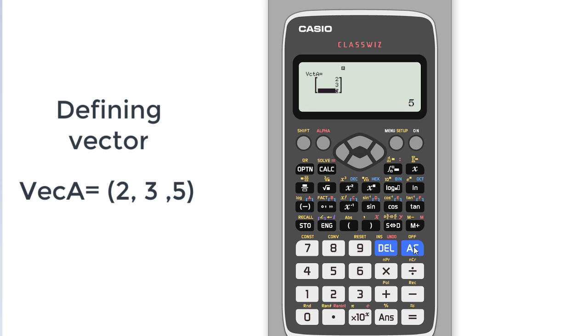Now press AC. Now go to the options and define another vector because we need another vector B. I have to select two for vector B. Again, the dimension is 3. I will put the random values: 1, -4, and 3.